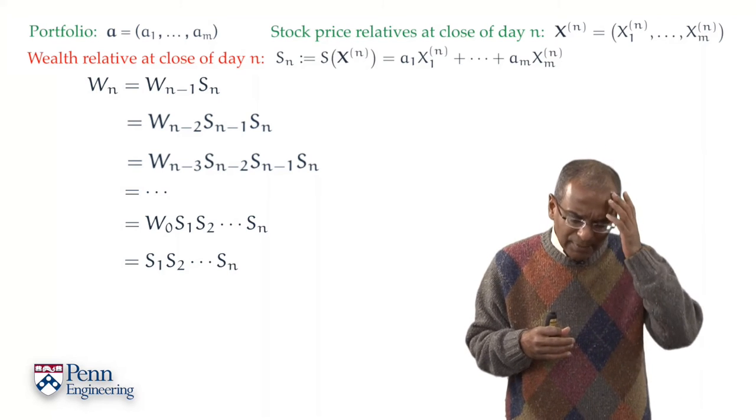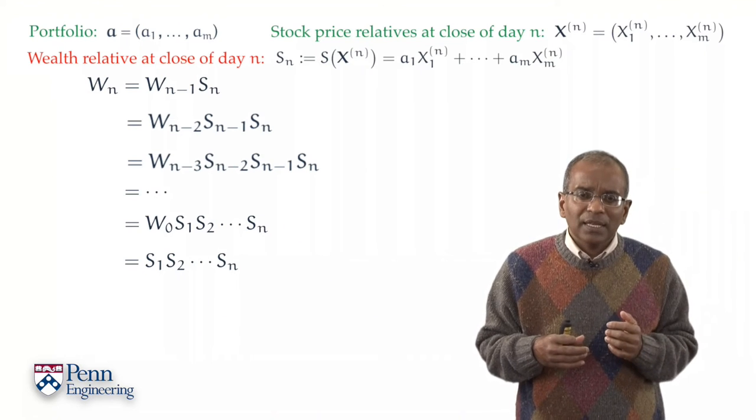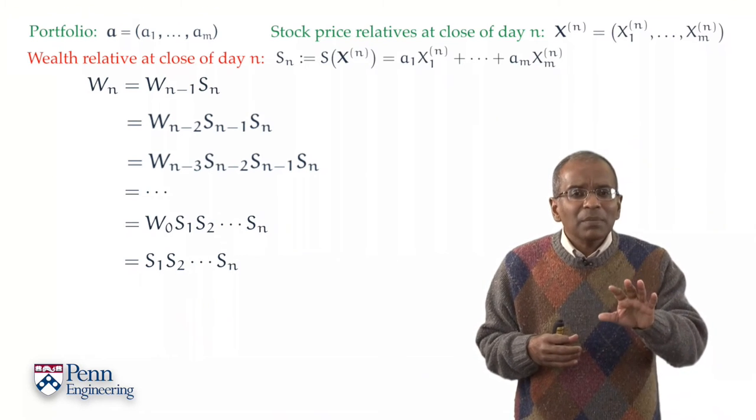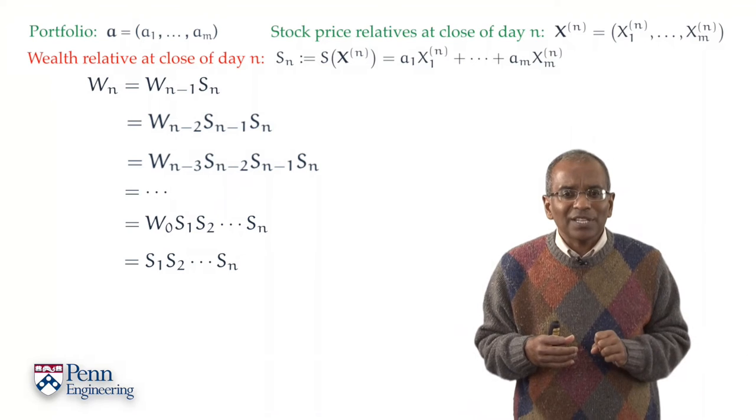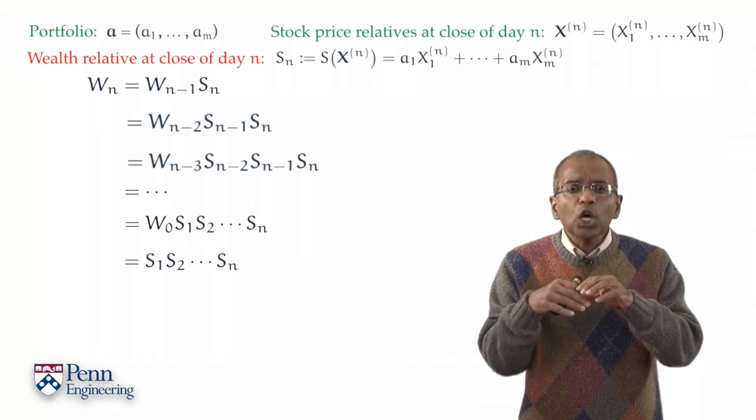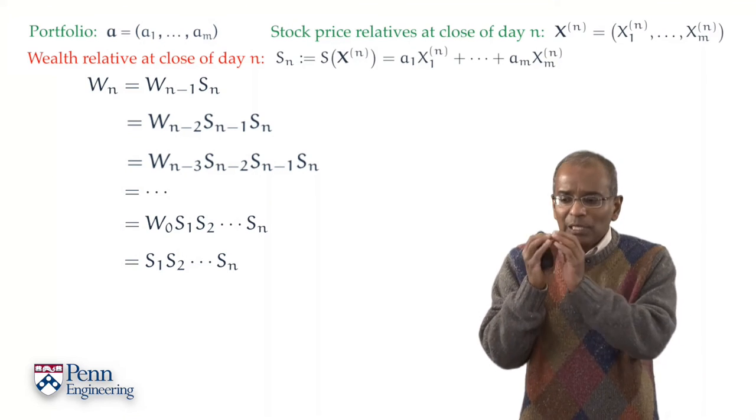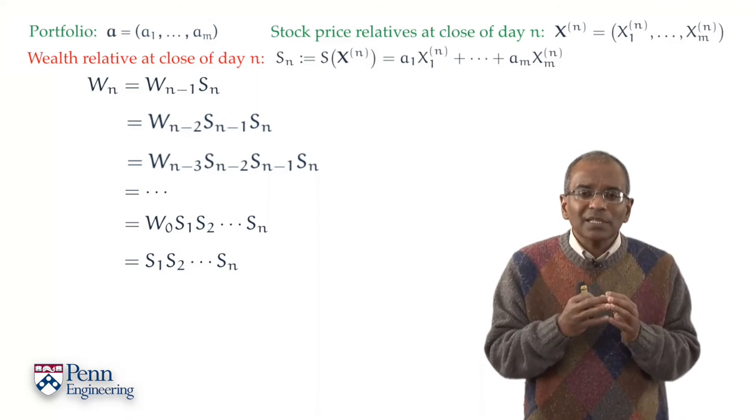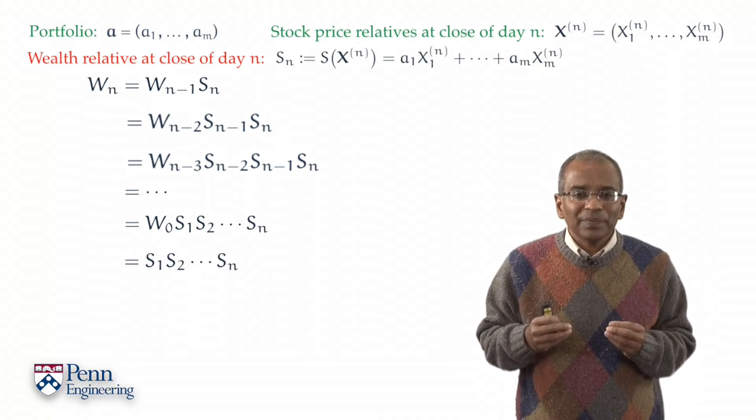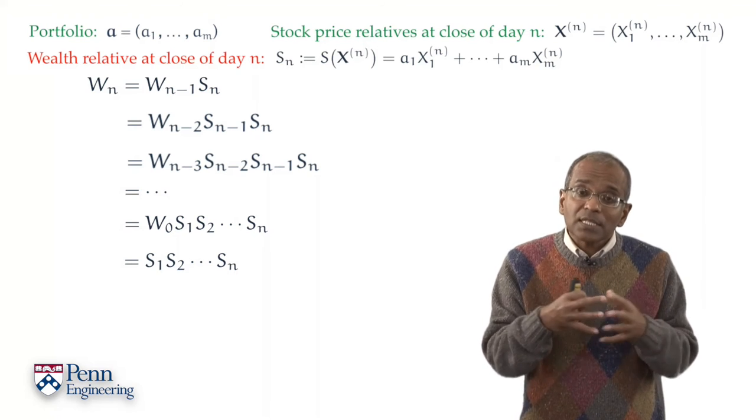How could one convert a product into a sum? We scratch our heads and we say, well, an atavistic tug at memory from our first days of calculus tells us: wait a minute, the logarithmic function has exactly the desired property. The logarithm of a product is a sum of logarithms. And so if I were to take the logarithm of the right hand side I would get a sum.